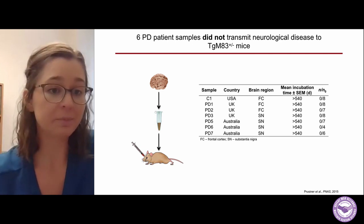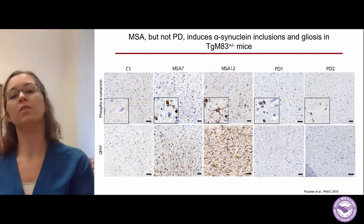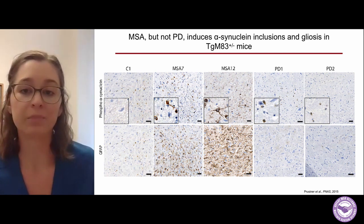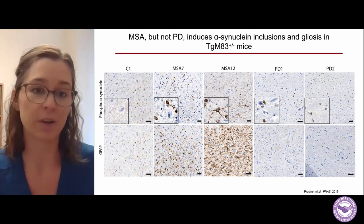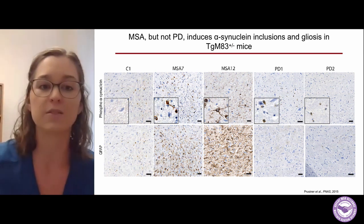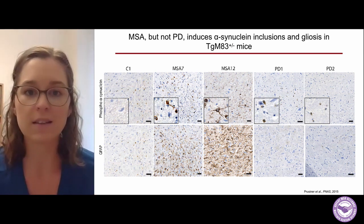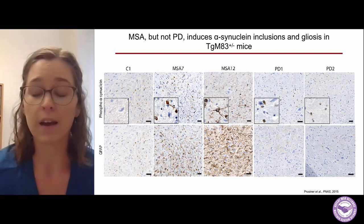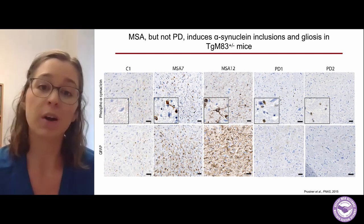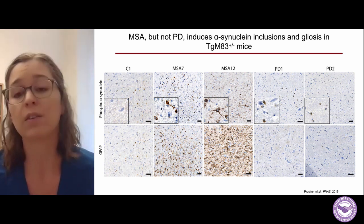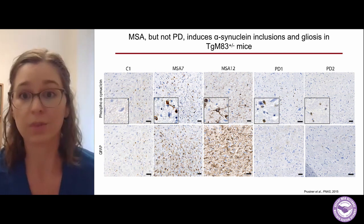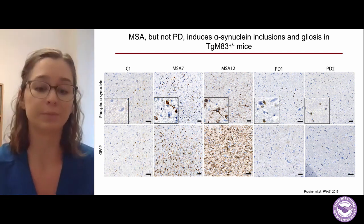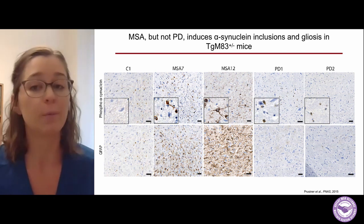When they examined brain pathology in these mice, control samples used as injected material caused no neuropathology, as seen here on the left by the absence of phosphorylated alpha-synuclein. With the two MSA cases, there is deposition of phosphorylated alpha-synuclein in the brain and abundant gliosis as well. But when we look at the two Parkinson's disease cases tested, there is very, very little staining for phosphorylated alpha-synuclein and no detectable gliosis, suggesting strain-specific behavior of MSA and PD in this mouse model. We can use this model to study MSA, but not PD.